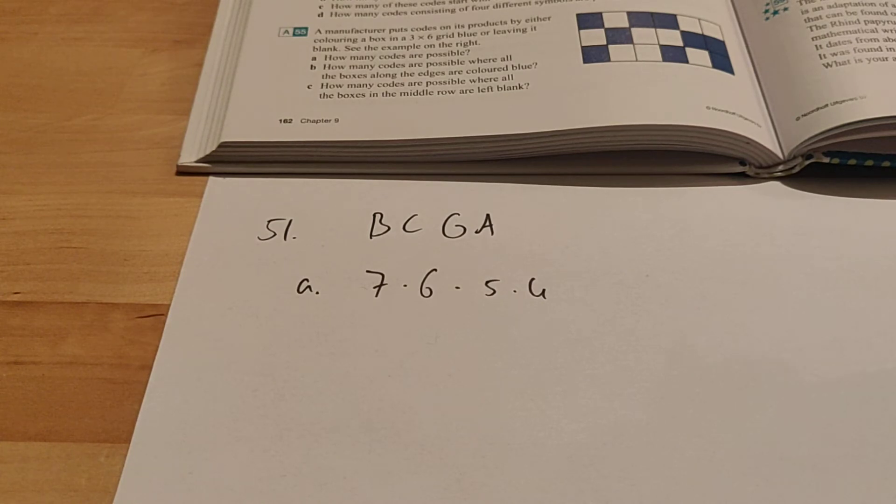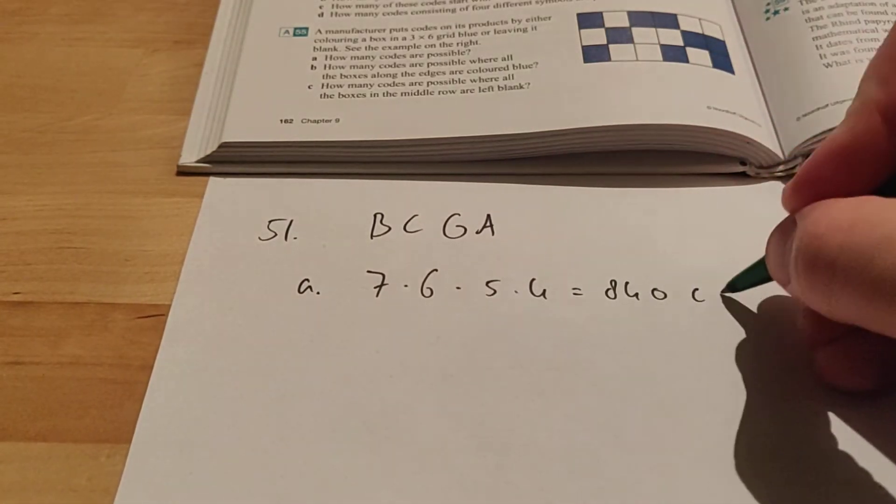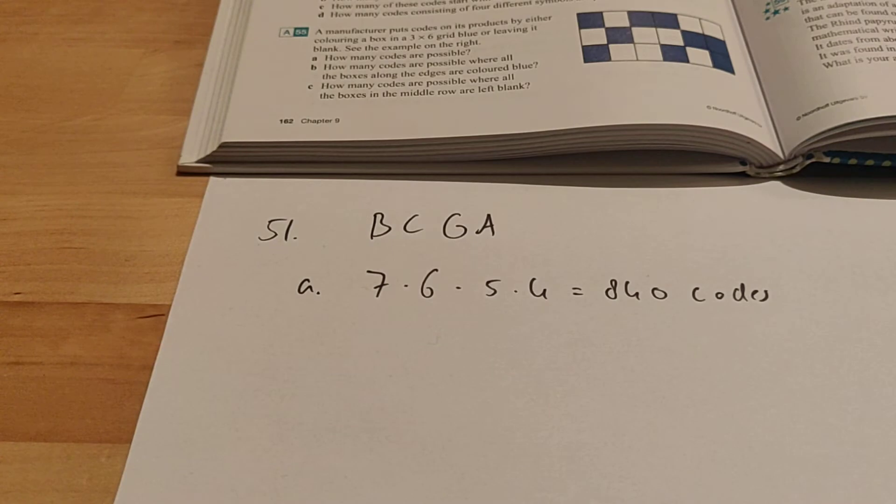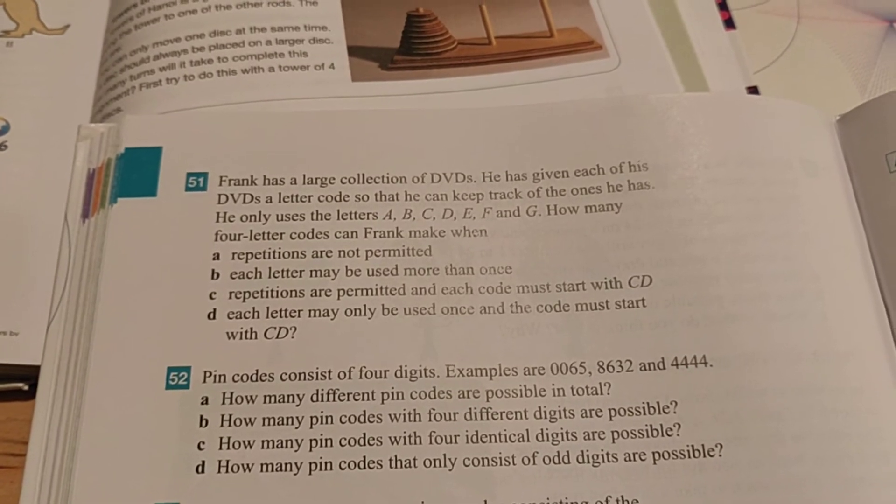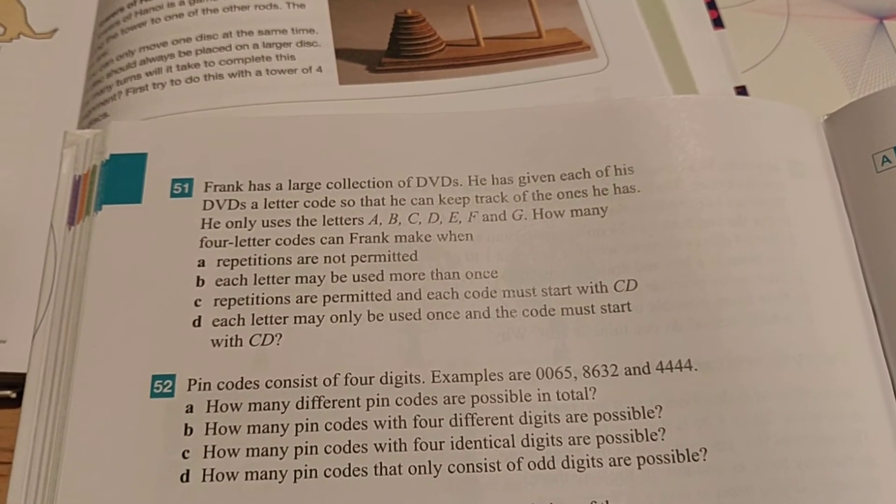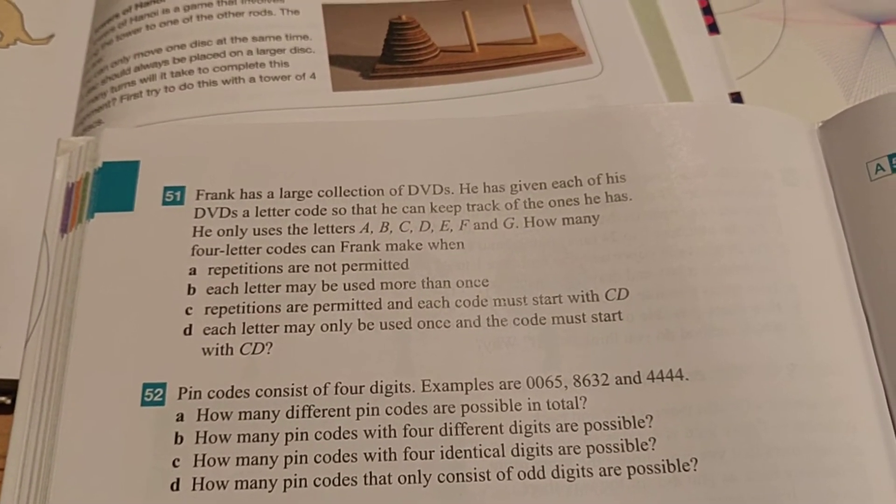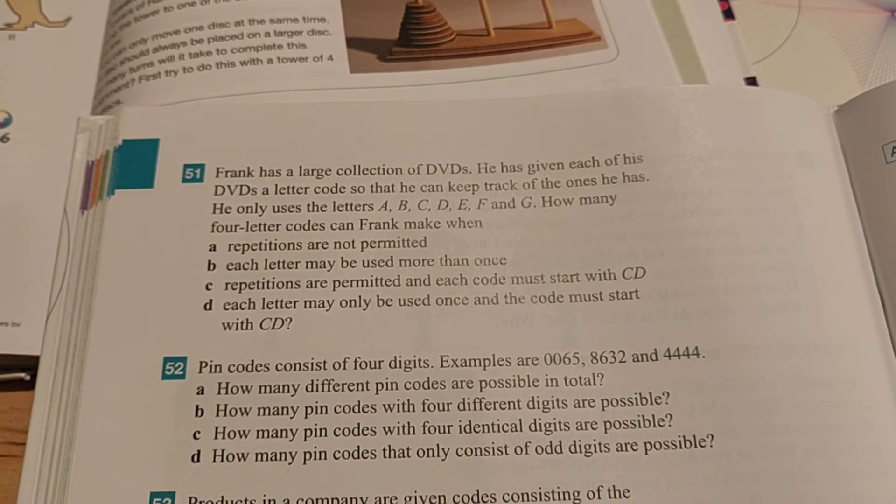So if you type this into your calculator, 7 times 6 times 5 times 4, you get the answer, which is 840 codes. That's how many codes he can make using exercise A. With exercise B, there is a different criteria that we need to do. It says each letter may be used more than once. So now he can use the same letter over and over again. So a code like BBBB is now allowed.